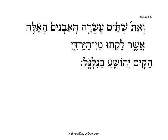We notice the structure here that the verb comes after a long object clause. 'And these twelve stones, which they took from the Jordan, Joshua set up at Gilgal.'